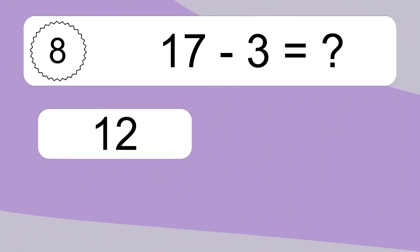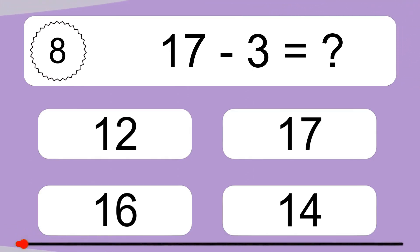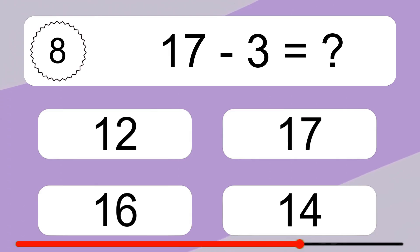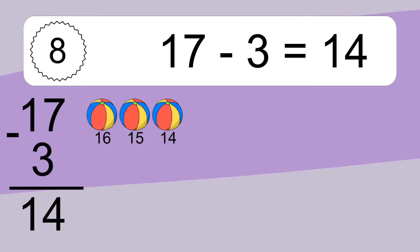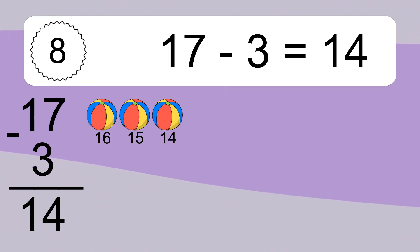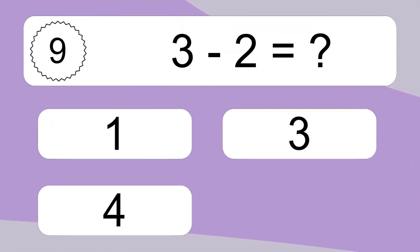17 minus 3 equals what? 17 minus 3 equals 14. Let's count it: 16, 15, 14.